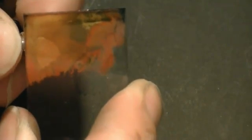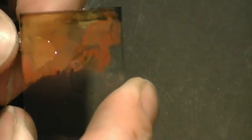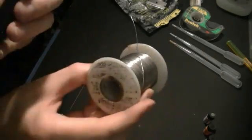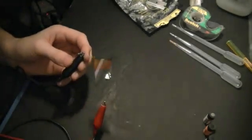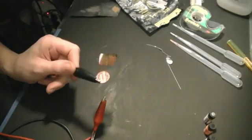I tried other work function metals for the cathode and I found that they work too, just not quite as well as the gallium indium. So aluminum, tin lead solder, carbon, all of them seem to work a little bit.